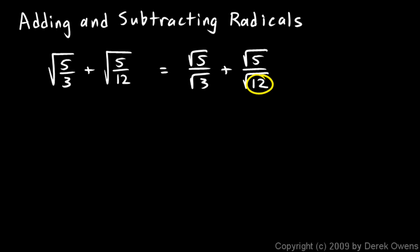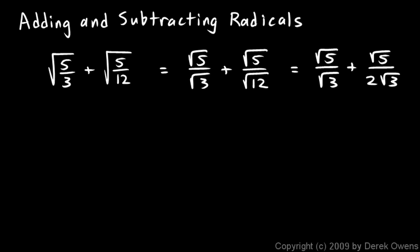Now, this 12 here is 4 times 3, and the 4 can come out as a perfect square factor. So let's rewrite it as square root of 5 over square root of 3, plus square root of 5 over 2 root 3. The square root of 12 can be written as the square root of 4 times 3, and that 4 gets square rooted and pops out front as a 2. So I have 2 root 3 instead of the square root of 12.